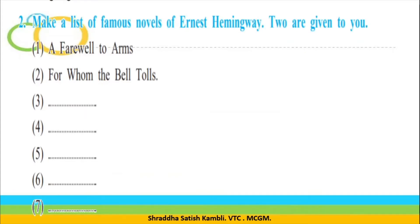So now we go to some exercises in the warming up part. You have exercise 2, where you are supposed to make a list of famous novels by Ernest Hemingway. Two are given to you: one is A Farewell to Arms, and the second is For Whom the Bell Tolls. So these are two of his books. Let us look at some more of his books.